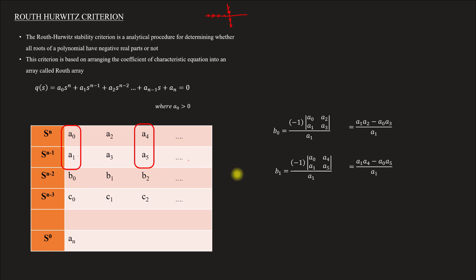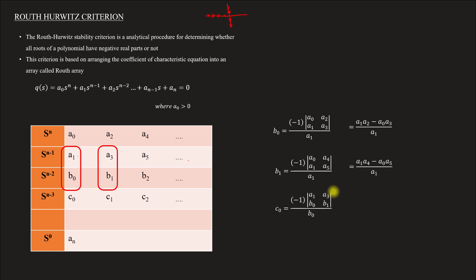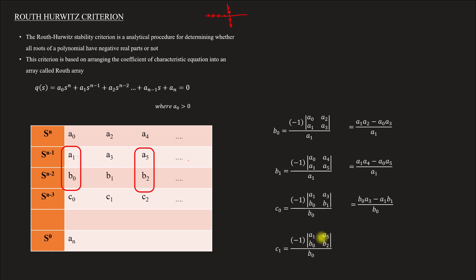Next, we have to find C0. We take the columns [a1, a3; B0, B1], and the equation is: C0 equals minus of the determinant of [a1, a3; B0, B1] divided by B0, which equals (B0 times a3 minus a1 times B1) divided by B0. Similarly, C1 is found by taking [a1, a5; B0, B2], giving C1 equals (B0 times a5 minus a1 times B2) divided by B0.